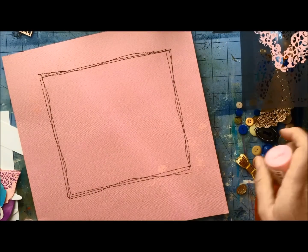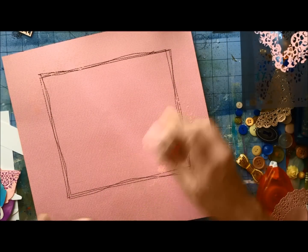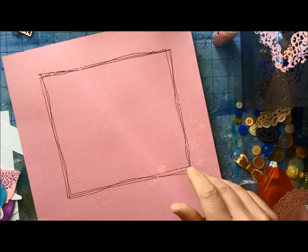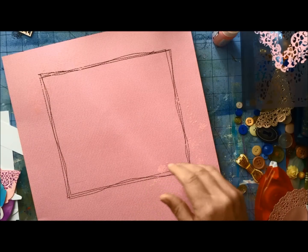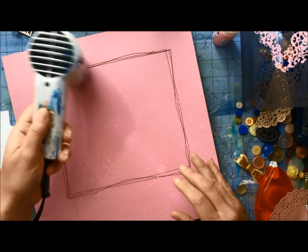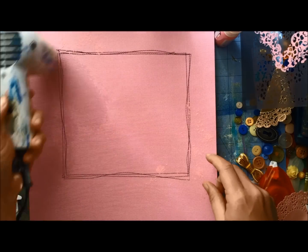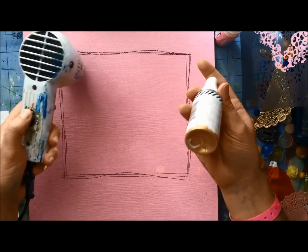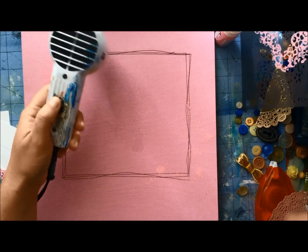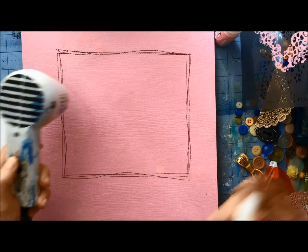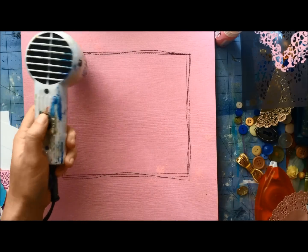So it is going to kind of just look like a little blobby, but it is going to add a nice little bit of texture to our project. And I'm hitting this with a heat tool while I simultaneously shake up some gold mist here to add a little more detail to our project.